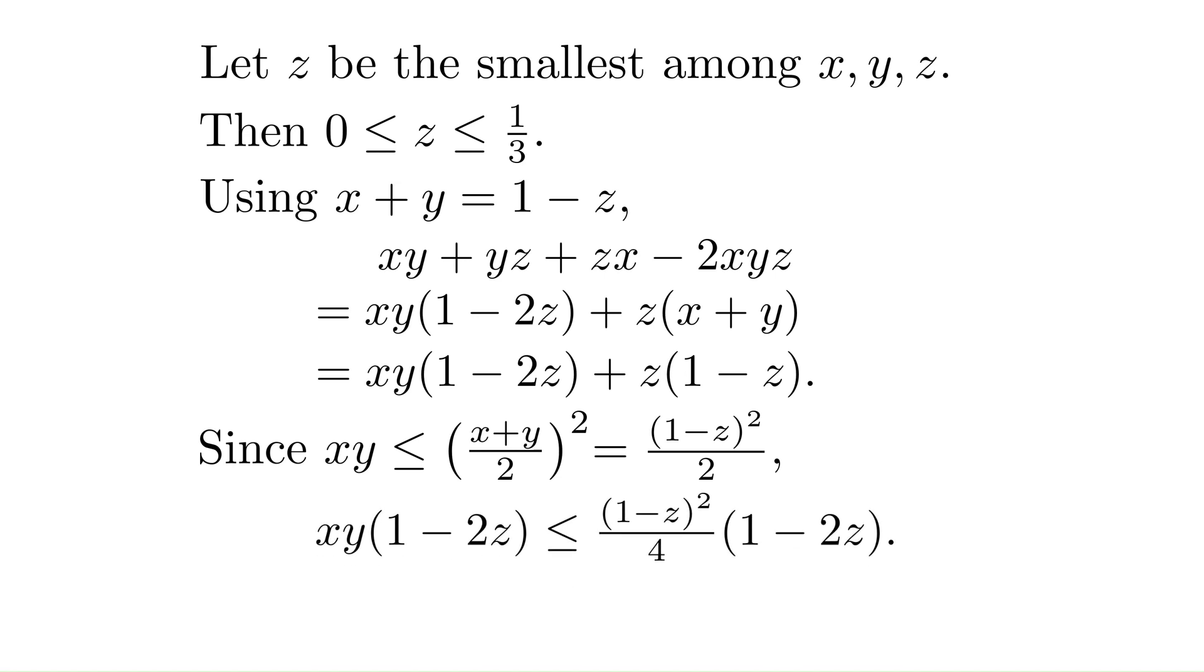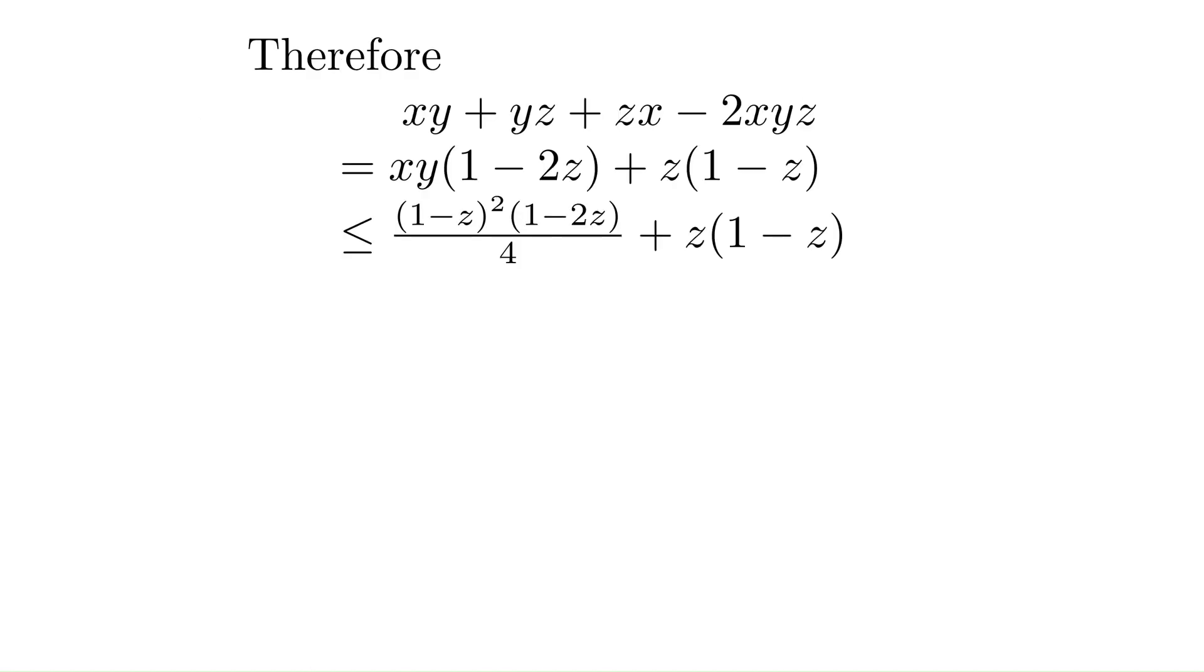So, the first part of the inequality above becomes xy times 1 minus 2z, which is less than or equal to an expression in z. Now, we put everything together. xy plus yz plus zx minus 2xyz equals xy times 1 minus 2z plus z times 1 minus z. And the first part is less than an expression in z as we calculated in the previous page.